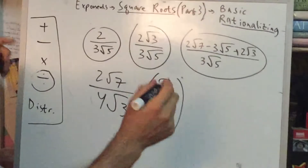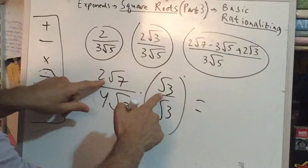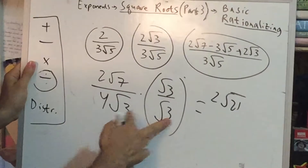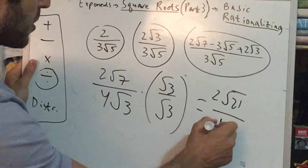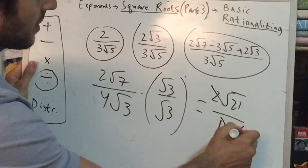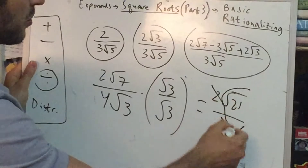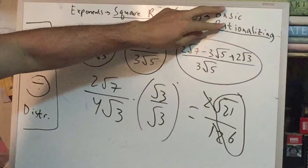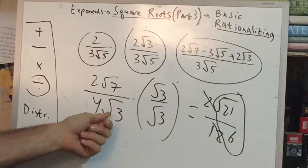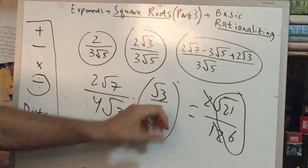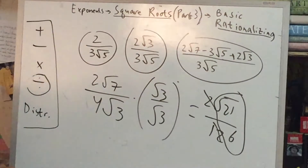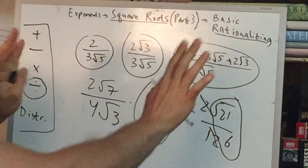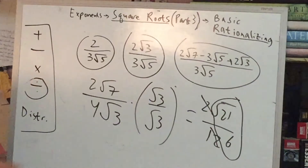Let's try another one. Let's say you have two root seven over four root three. We want to undo this square root, so we multiply by root three over root three. This becomes two root 21 on top — that's seven times three. The square root of threes undo each other, so you get four times three, which is 12 on the bottom. Now you can also simplify to get root 21 over six. So that would be your final answer. In a nutshell, to do basic rationalizing: whatever's in your denominator, you multiply by that same square root over itself, top and bottom, and this will undo the square root in the denominator.